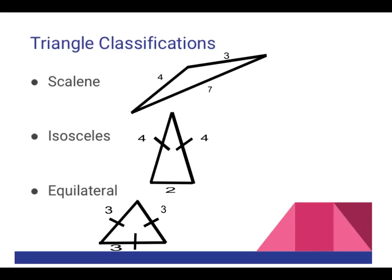Triangles have three sides. The lengths of these three sides can be used to classify the triangles into three different categories based on how many sides are equal. There are scalene, isosceles, and equilateral triangles.